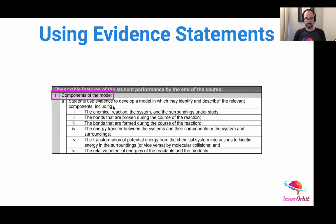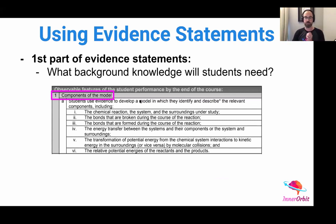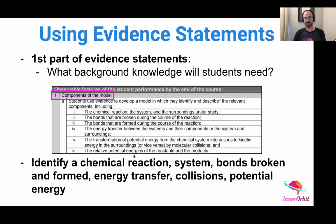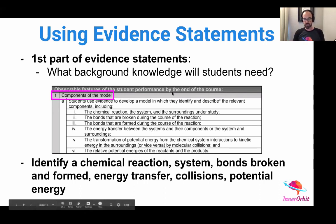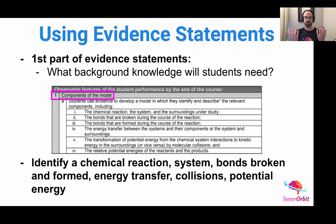In the very beginning, the first part of the evidence statements — 'components of the model' is one example, from HS-PS1-4 — asks what background knowledge students will need. This is really helpful if you want to do some diagnostic testing, do-nows, or warm-ups. Students need to understand that there is a chemical reaction, so assessing whether something is a physical or chemical change is important. What are the boundaries of a system? Are bonds broken? Are bonds formed? Was energy transferred? Do students know what collisions are and how those transfer energy? And do they know that there are changes in potential energy? These are all component pieces of knowledge students should have before they get into HS-PS1-4.